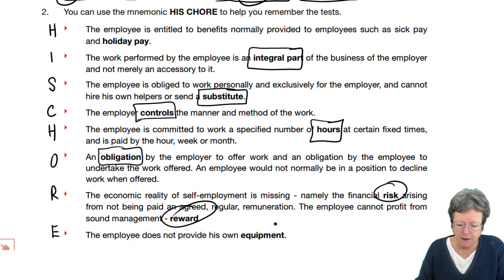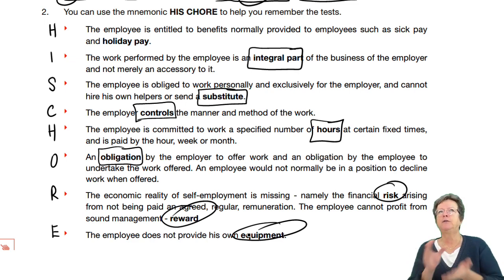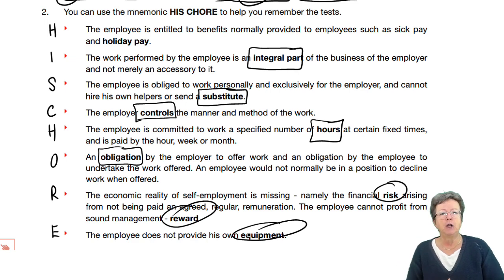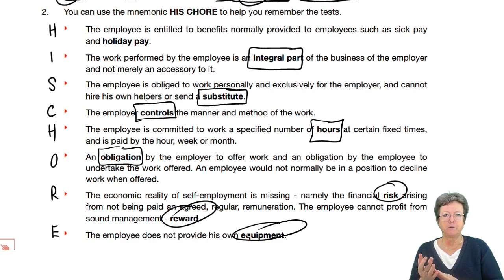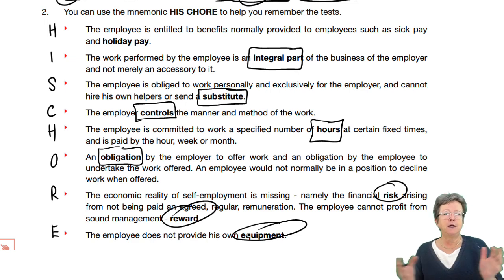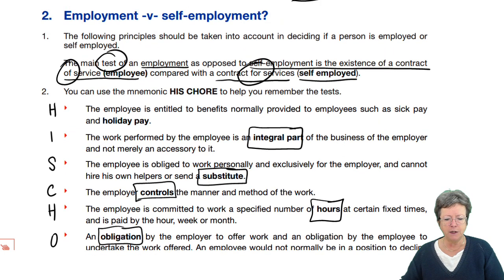E: An employee does not provide his own equipment. You wouldn't go to work for an accountant having passed your exams and expect to bring your own desk and chair. But if you were a builder going to that accountant's to build a wall, the accountant isn't going to provide the bricks, the cement mixer, or the tools — as self-employed, you're expected to bring your own equipment.